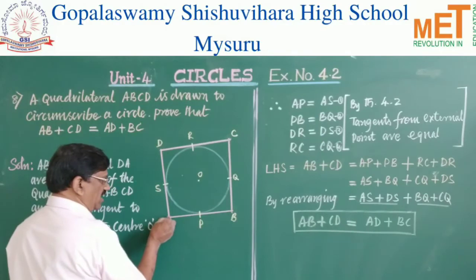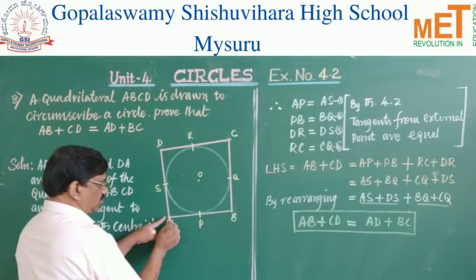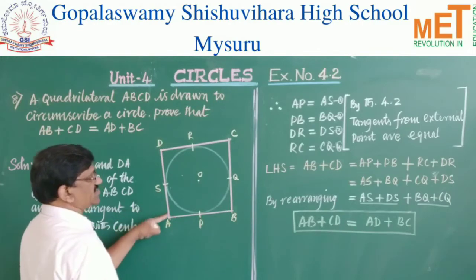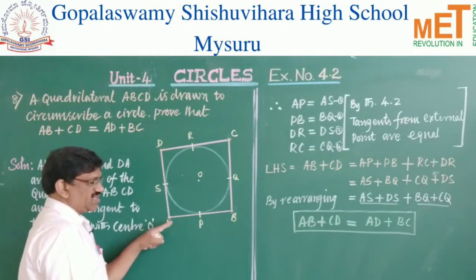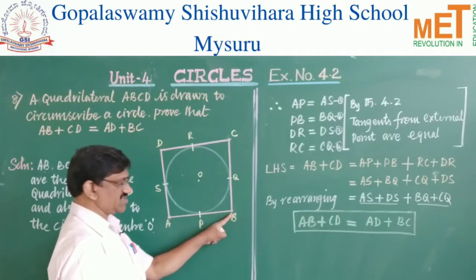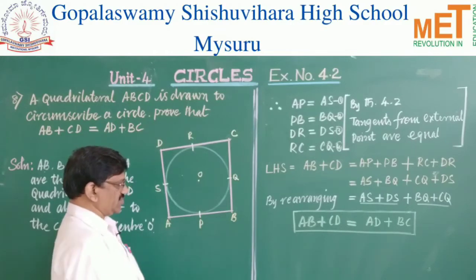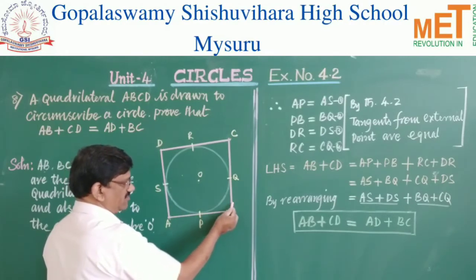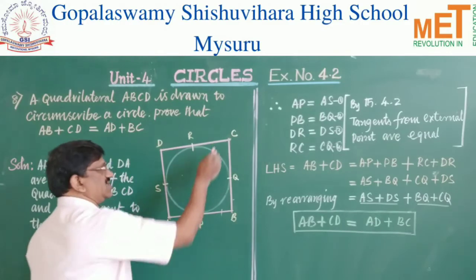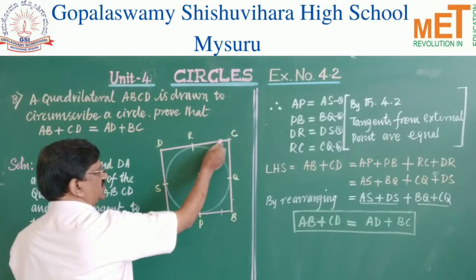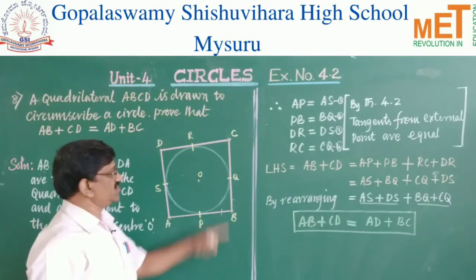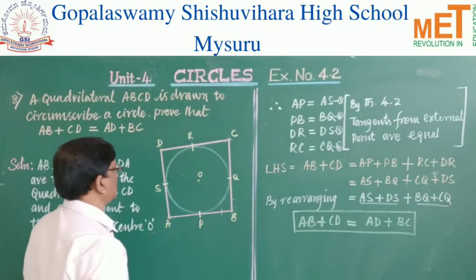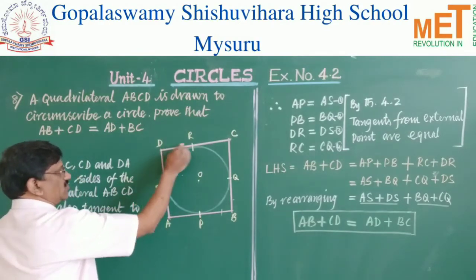Point A is external to the circle; tangents AP and AS are drawn from A, so AP = AS. From point B, tangents BP and BQ are drawn, so BP = BQ. From point C, tangents CR and CQ are drawn, so CR = CQ. Similarly from D, DR = DS — all by Theorem 4.2: tangents from an external point are equal.